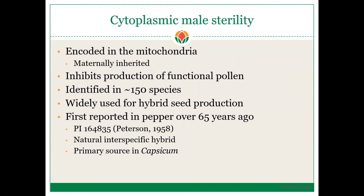As an overview, CMS genes are encoded in the mitochondrial genome and, as discussed last time, are maternally inherited — coming from the mother — so all progeny will have the same mitochondrial genome as their mother. CMS genes inhibit production of functional pollen in pepper. However, CMS has been identified in more than 150 species, the first being onion, and it is widely used for hybrid seed production today in agronomic as well as some vegetable crops.